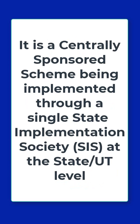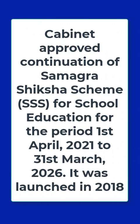It is a centrally sponsored scheme being implemented through a single State Implementation Society (SIS) at the state and union territory levels. The cabinet approved continuation of the Samagra Shiksha scheme for the period 1st April 2021 to 31st March 2026. This scheme was originally launched in the year 2018.